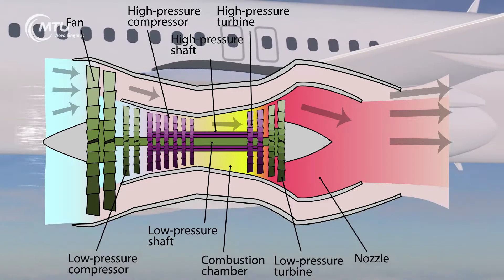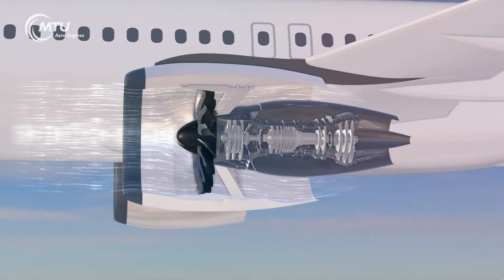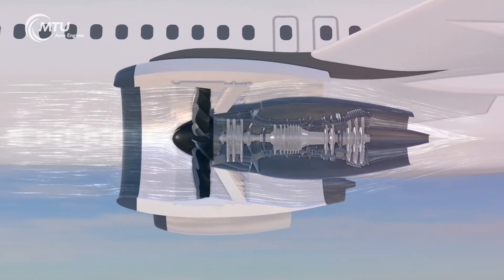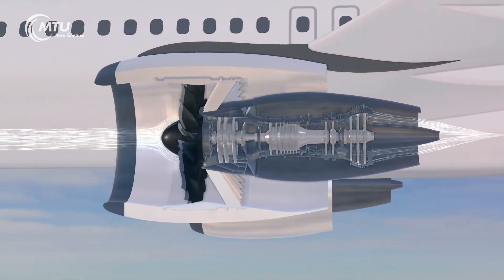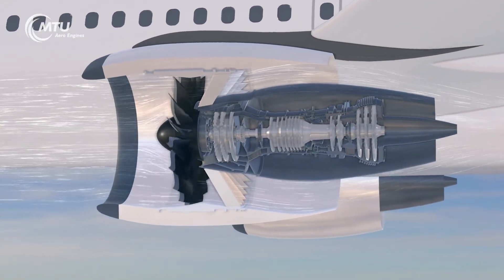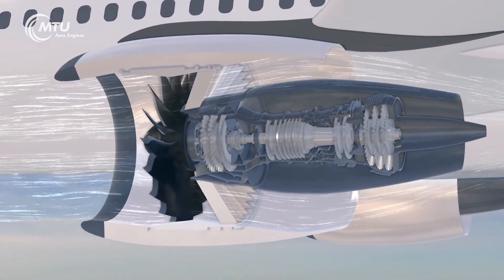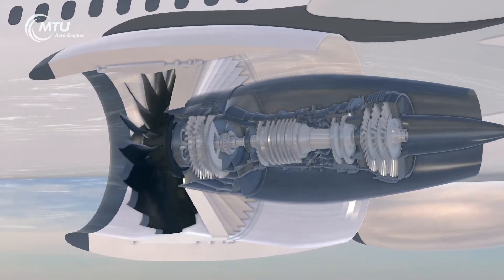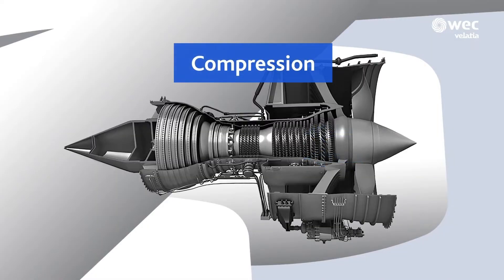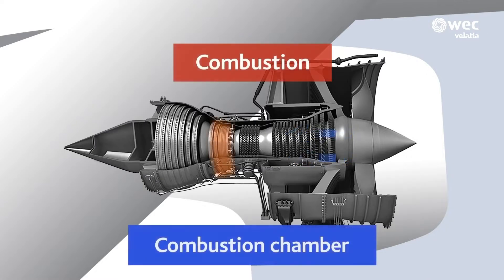Turbofan engines are crucial to modern aviation due to their efficiency and reliability. They operate on the principle of a gas turbine engine, where a large fan generates most of the thrust by pushing air around the engine core. The core consists of a series of compressors, a combustion chamber, and a turbine. The combination of these components helps achieve efficient fuel use and effective thrust generation.